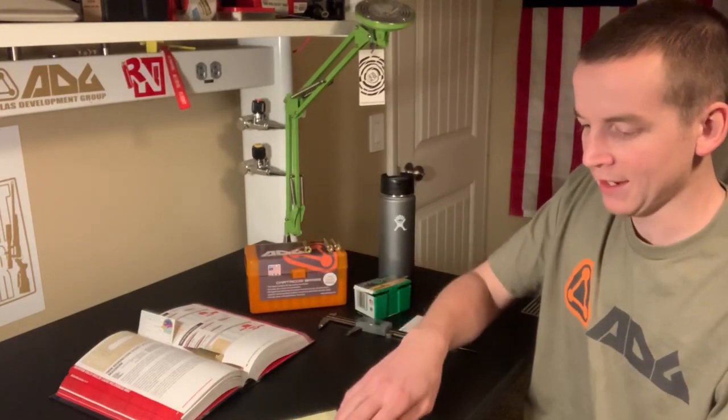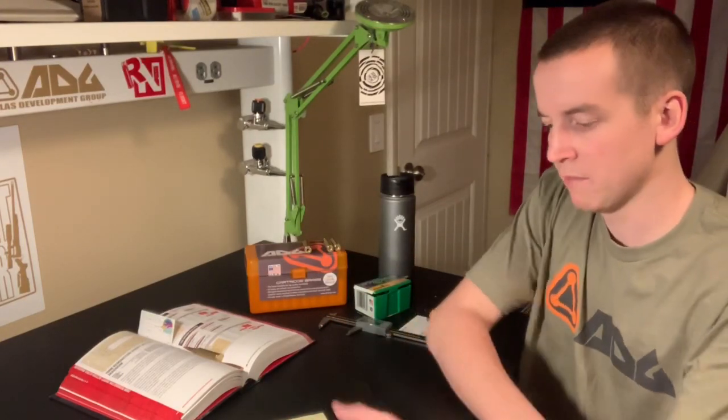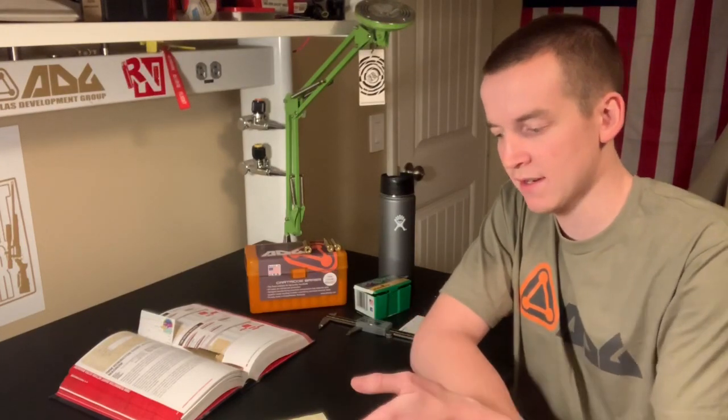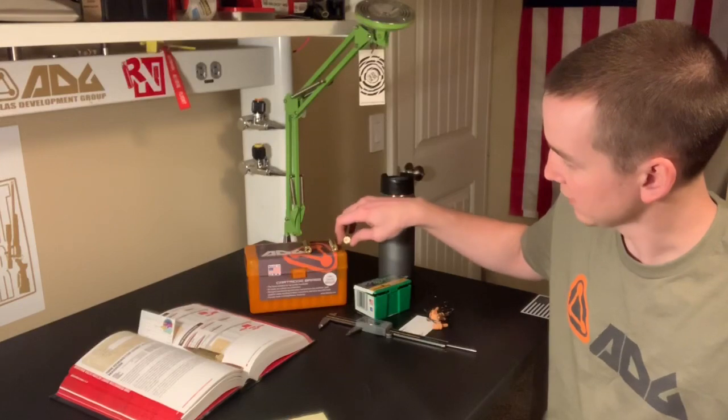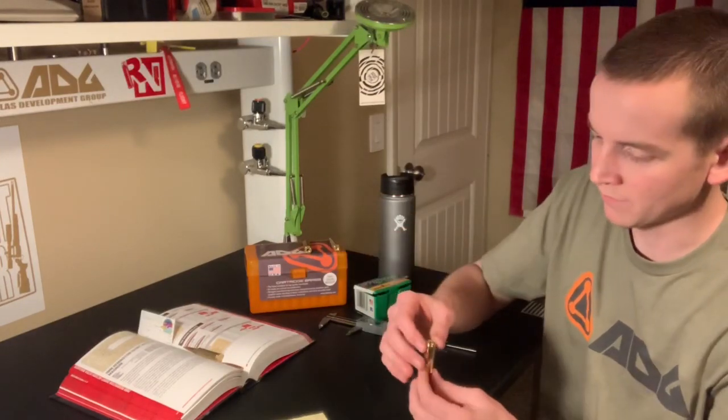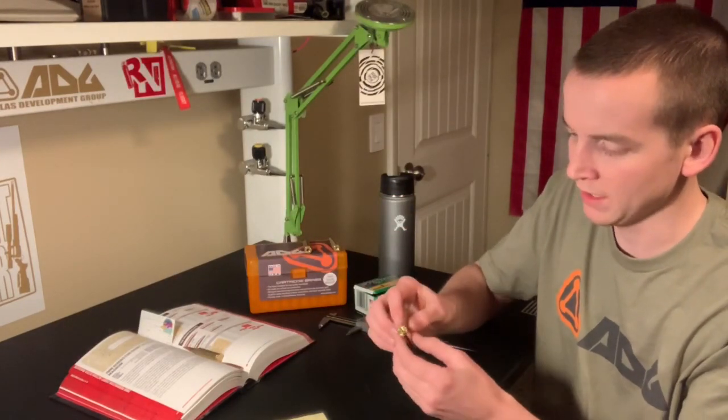They don't offer a line of WSM as of right now so I switched to the 7 millimeter short action ultra mag. So one of the first things I did is I took it and weighed it, and the SD of the WSM brass is 1.5, the SD in the weight variation on the SAUM is 0.72, so it's literally half of what the Hornady was and I feel like this is way higher quality.